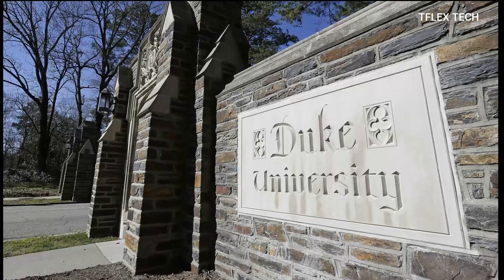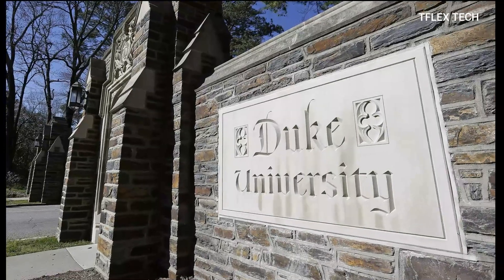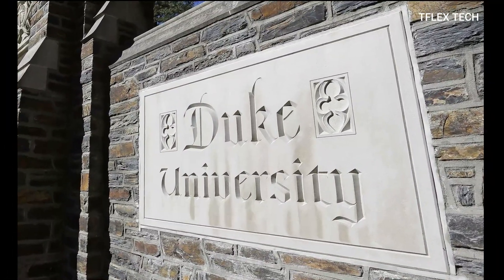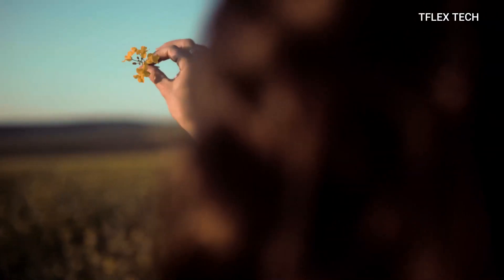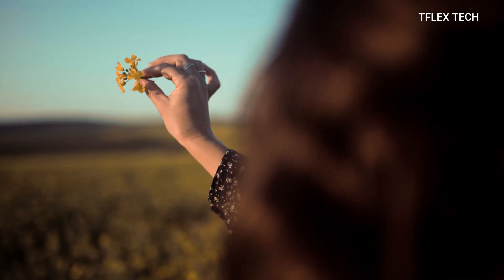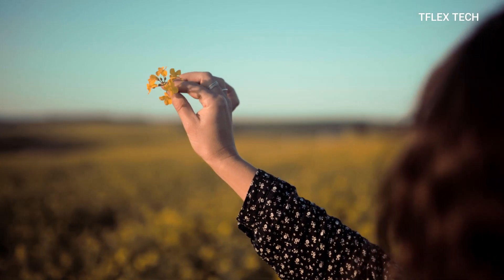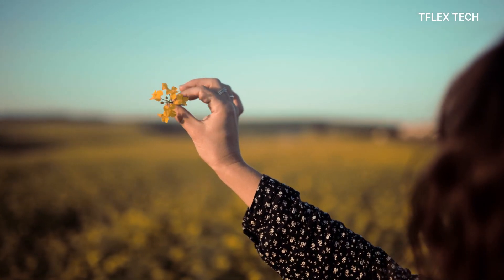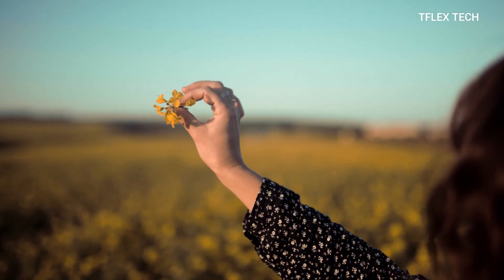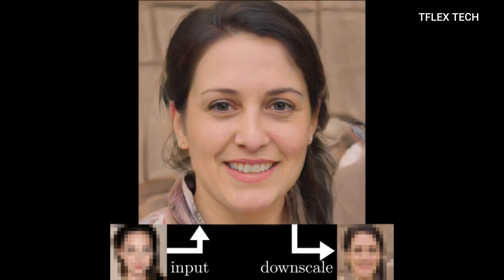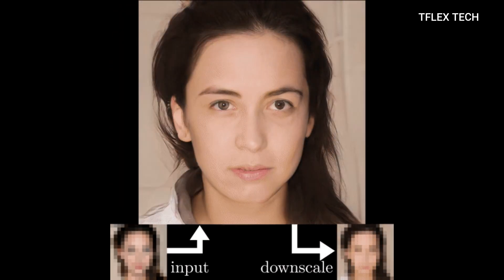Duke computer scientist Cynthia Rudin said, never have super-resolution images been created at this resolution before with this much detail. The images generated by the AI do not resemble real people; instead they are faces that look plausibly real. It therefore cannot be used to identify people from low-resolution images captured by security cameras.